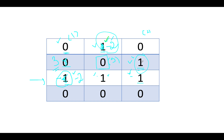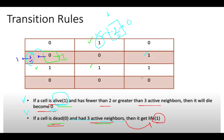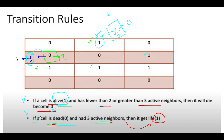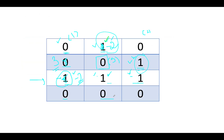Next we see one. Counting active neighbors: one and two. This condition is not met — it doesn't have fewer than two active neighbors, so the state remains as it is. Next we see zero. Counting active neighbors — it turns out to be two, so the condition is not met and it will not get back to life. Next we see zero. Counting active neighbors: one, two, and three. This should become active because the rule is satisfied — if it is dead and has three active neighbors, it should get back to life. So we transition this to three. For the last cell, the number of active neighbors turns out to be two — no change will happen.